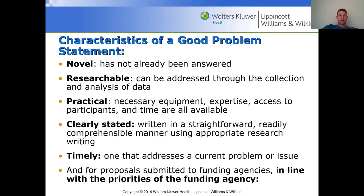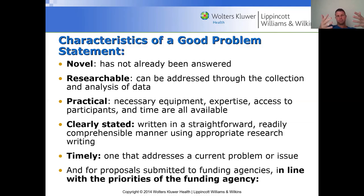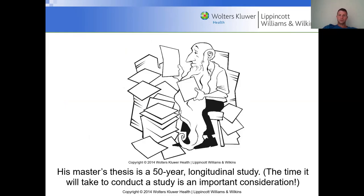There's no problem with taking funding from those places, but you've got to be straightforward with them. What you find might not be in their best interest. You might find that soft drinks don't contribute to a certain disease, or you might find that they are a big contributor. Whatever's found, that's what you report. And when you're putting your proposal together, don't write to a funding agency describing one thing and then do something else when you actually conduct the study. You've got to stick to what you told them you were going to look for.